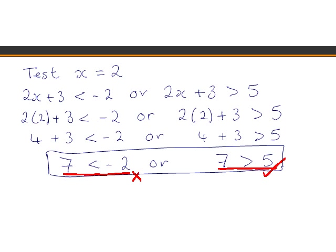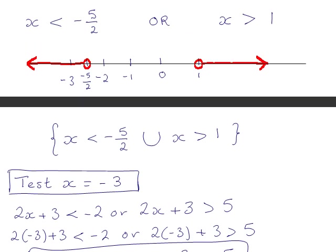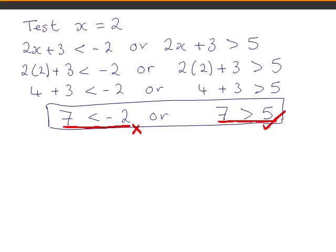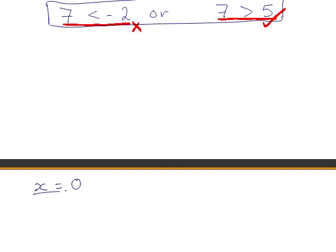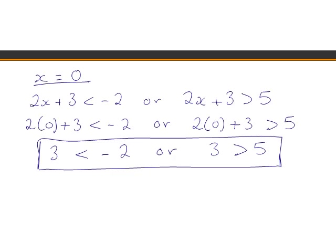Now we'll check a number that is not part of the solution. Looking back at our number line, that would be a number between −5/2 and 1, so we'll test the number 0. You should check this yourself and you will see that you get 3 less than −2 or 3 is greater than 5.